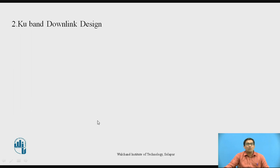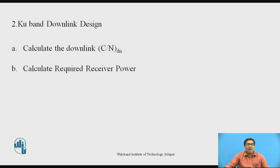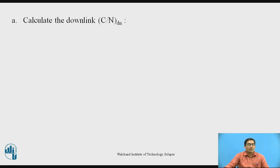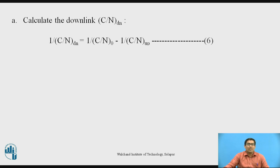Now we want to design the KU band downlink design. For the downlink design, we need to: first, calculate the downlink C/N; second, calculate the required received power; and third, calculate the path loss. For the downlink C/N, the formula is: 1/(C/N)down = 1/(C/N)overall − 1/(C/N)up (equation 6), where (C/N)overall = 17 dB.